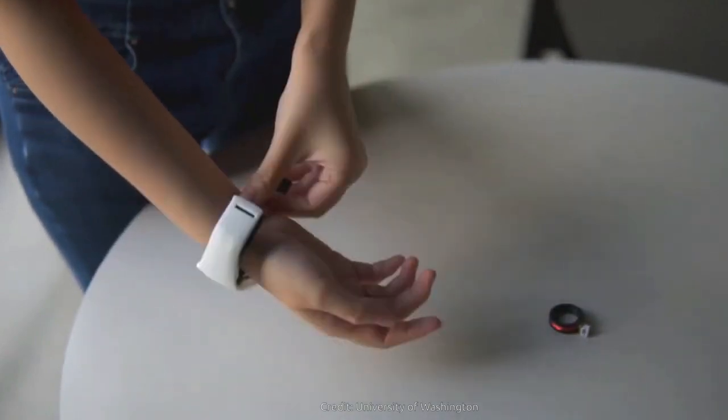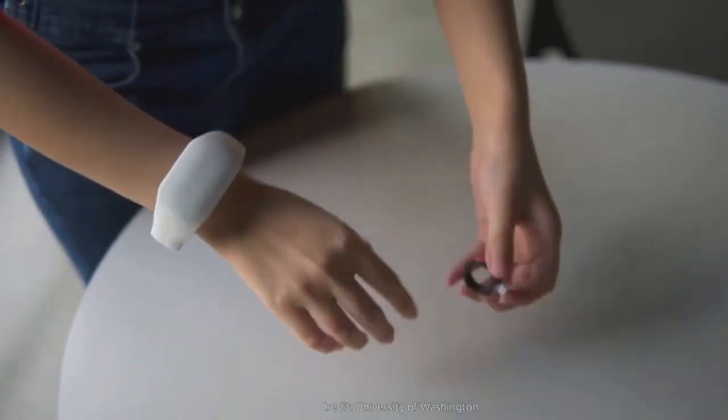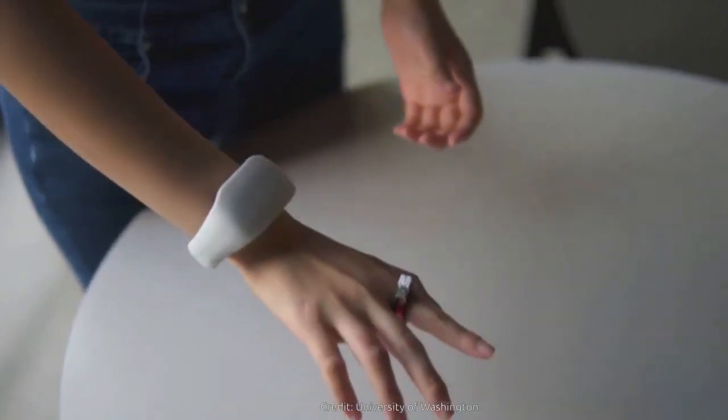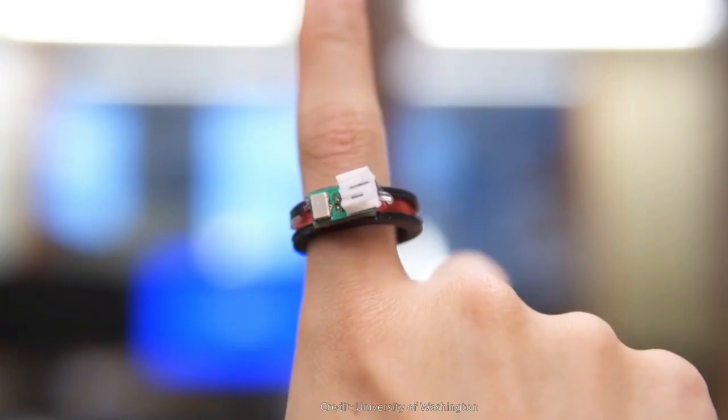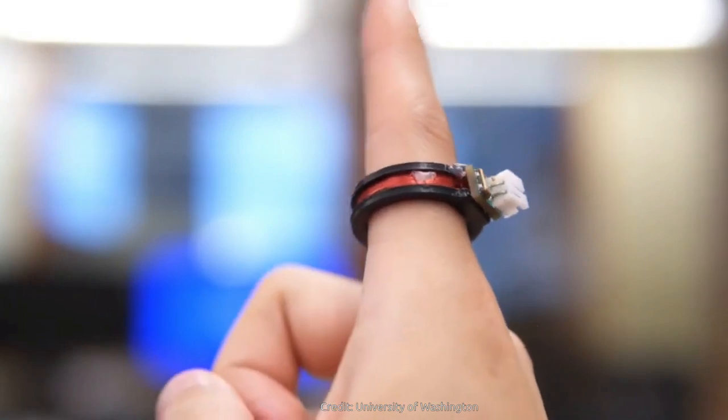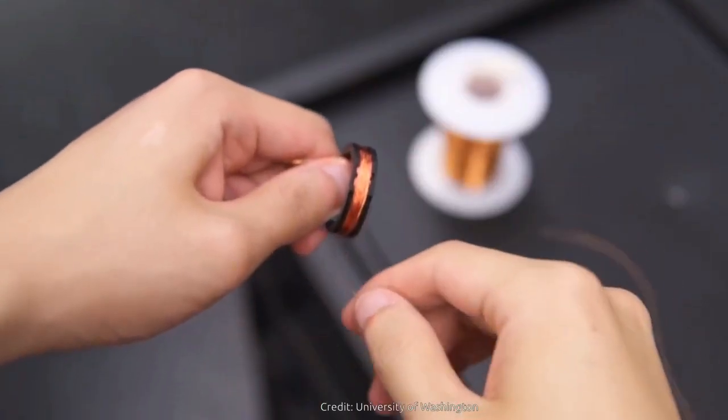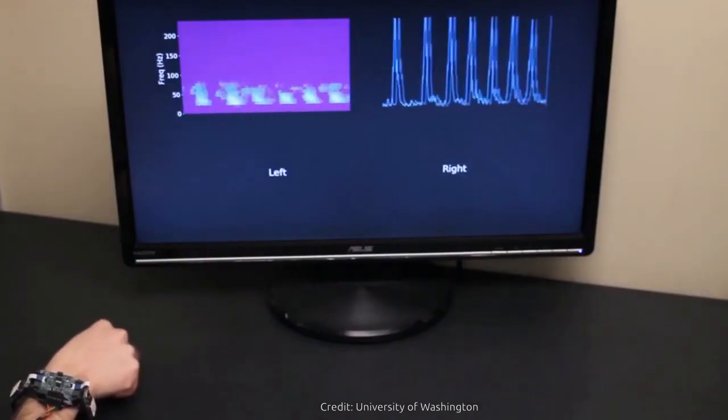From there, they can determine where the user's finger is located. Arrow Ring's ring consumes only 2.5 milliwatts of power, which produces an oscillating magnetic field that the wristband can constantly sense.